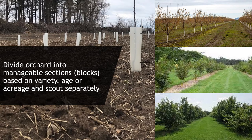Getting into the nitty-gritty of scouting an orchard, the first thing you want to do is divide your orchard into manageable sections — often called blocks — based on variety, age, or acreage, and scout those separately. Pests affect different ages of trees differently. In a newly planted orchard with few leaves, foliar feeders such as aphids or spring feeding caterpillars can disproportionately impact the tree's ability to photosynthesize and establish. As the trees age and put on more foliage, they can tolerate quite a bit of foliar damage. Similarly, some varieties are more susceptible to particular pests such as eastern filbert blight than others, which is why it's helpful to scout these separately.